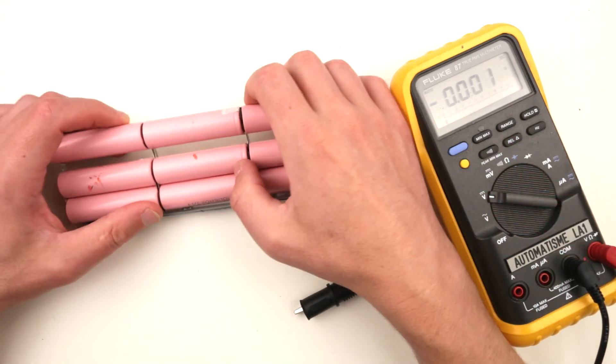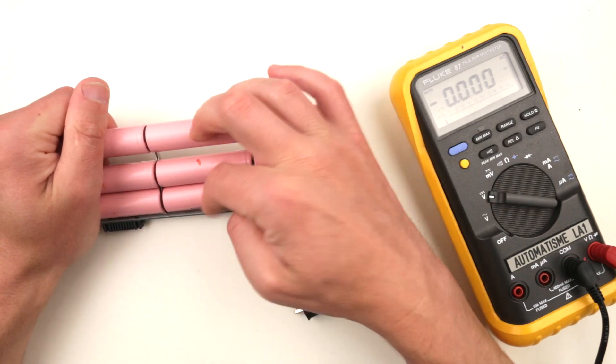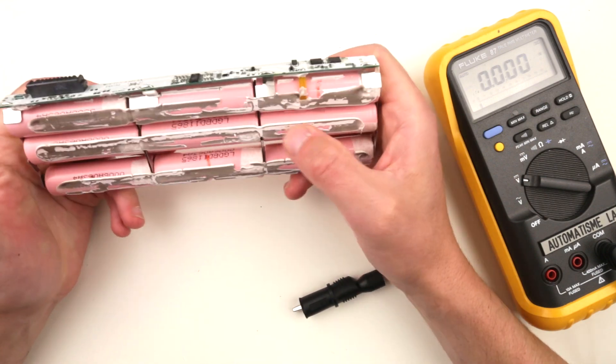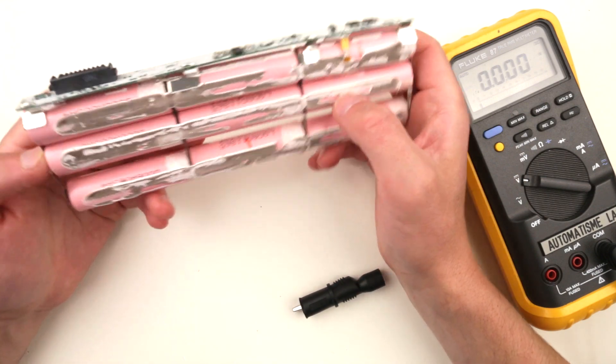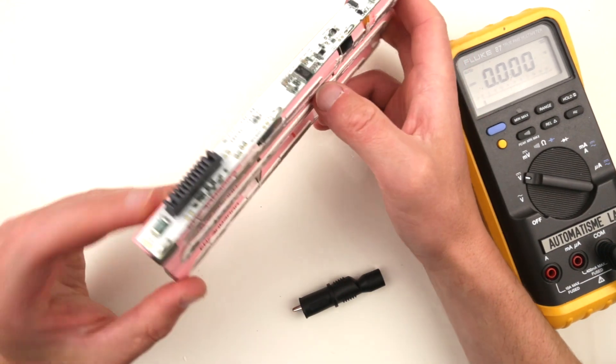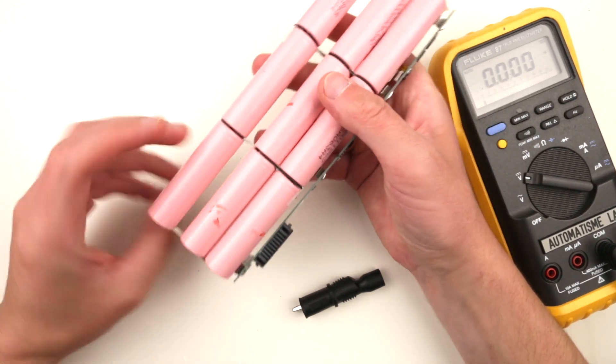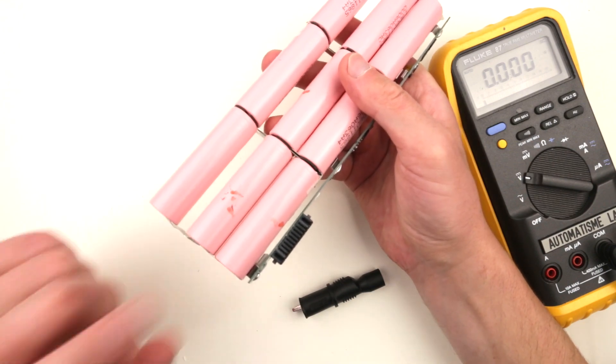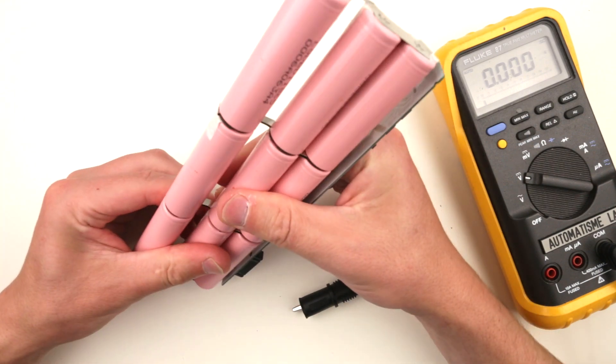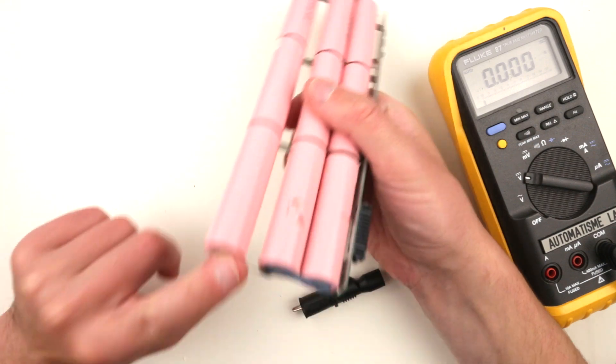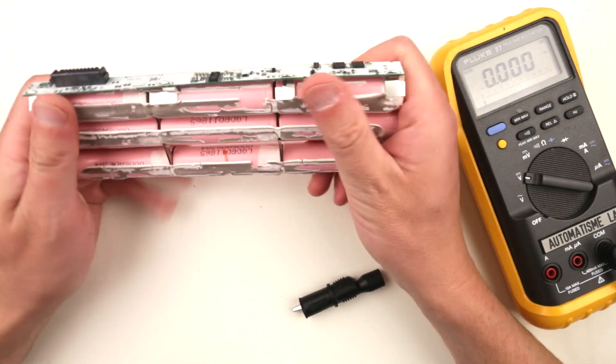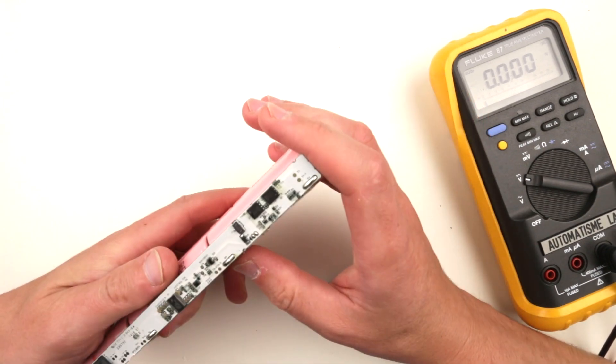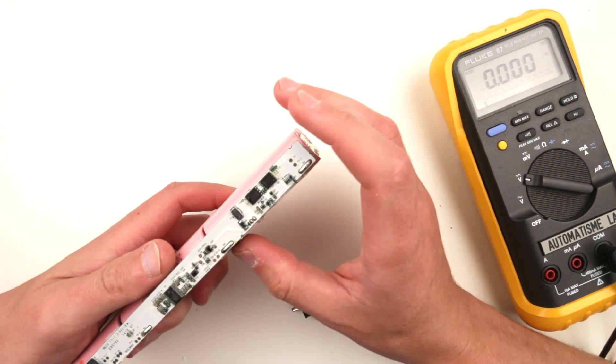Now we know that this bank is gone. At least we have two banks which are still more or less operational. In order to figure out what's actually failed on this side, I have to detach those batteries. But when I detach them, it will be very hard to put them back because I don't have a welding machine to weld them. Let's look at the electronics first.